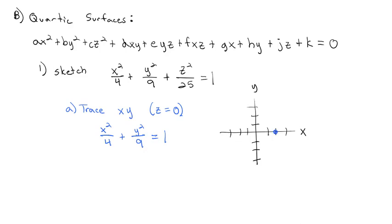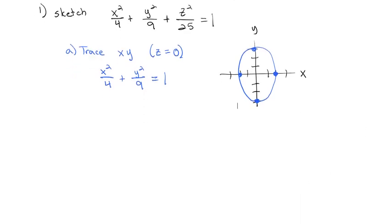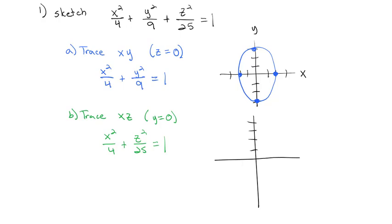We also draw a trace in the xz-direction by setting y = 0, giving x²/4 + z²/25 = 1. The x's go 2 units each direction and the z's go 5 units each direction, so on the xz-plane we end up with a tall, skinny ellipse.